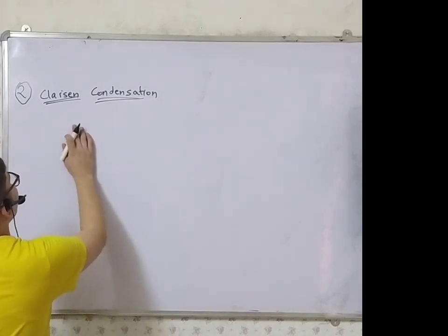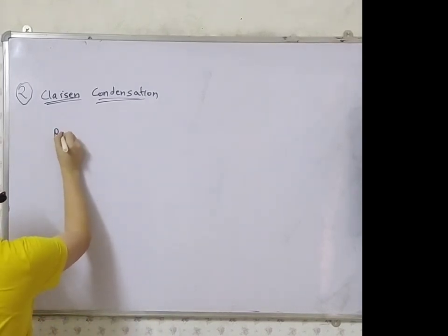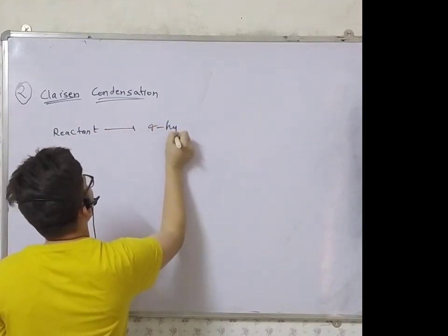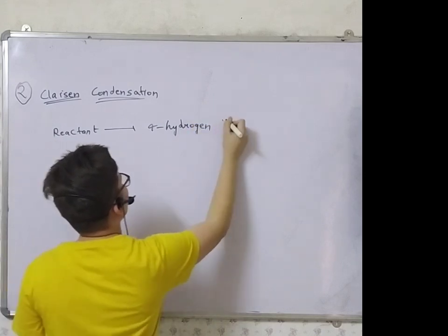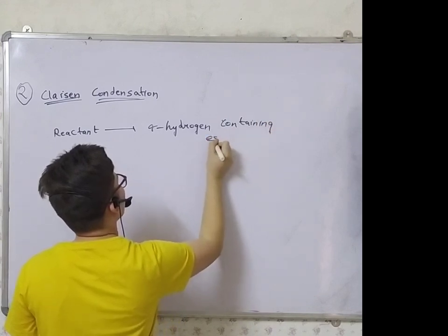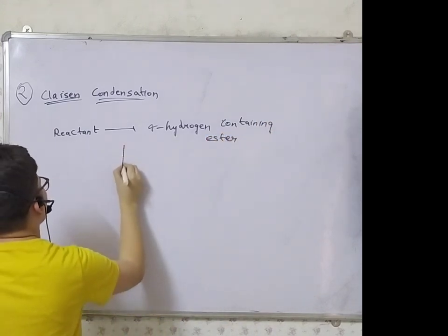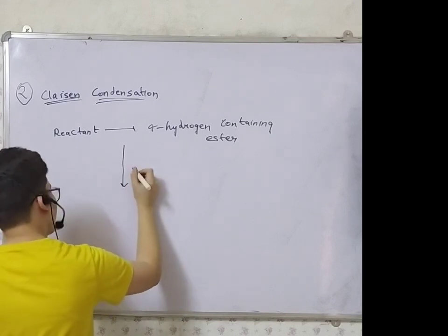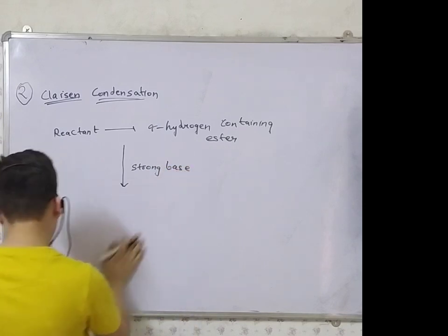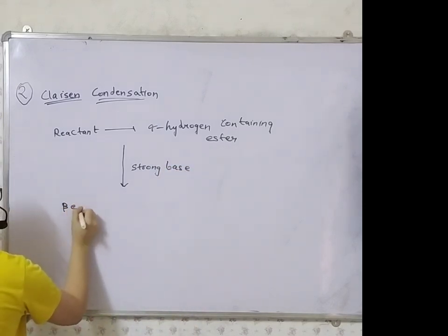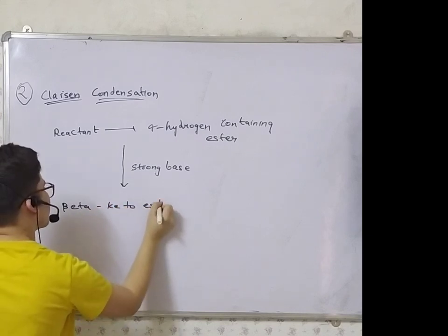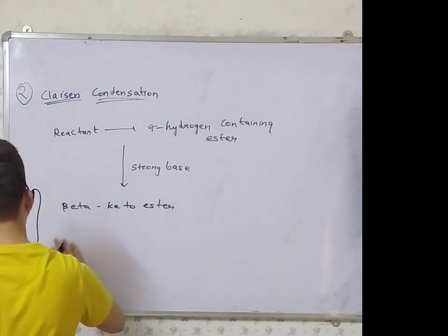The second reaction we will see is Claisen Condensation. The reactant of Claisen Condensation is an alpha-hydrogen-containing ester. The condition given is a strong base, and the product we get is a beta-keto ester.